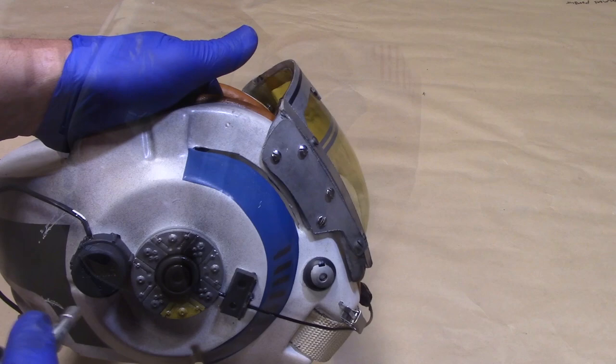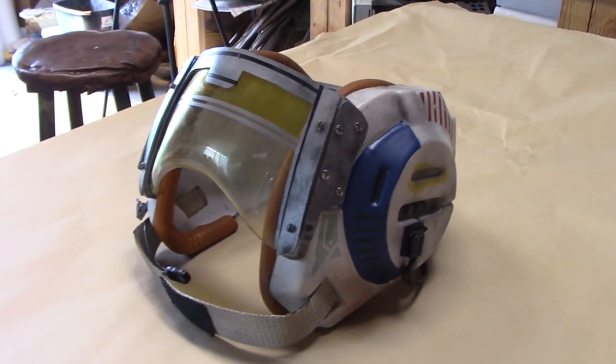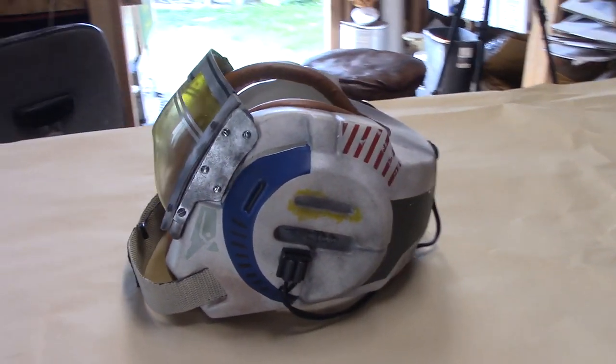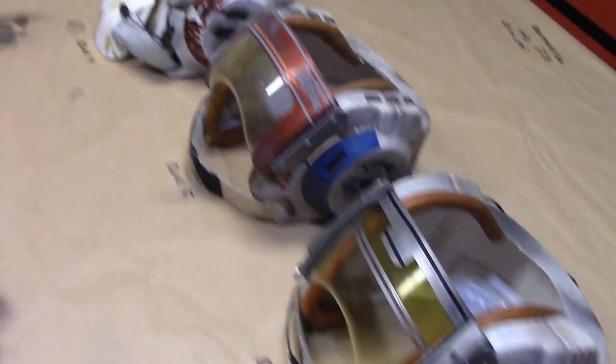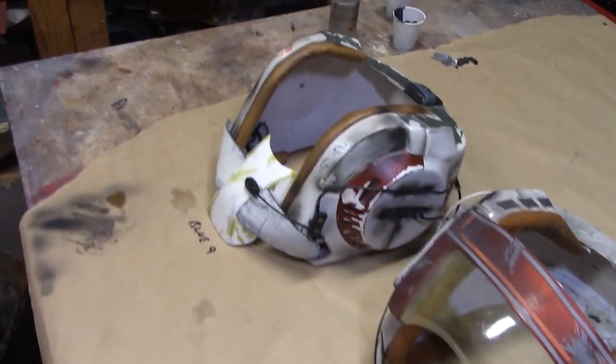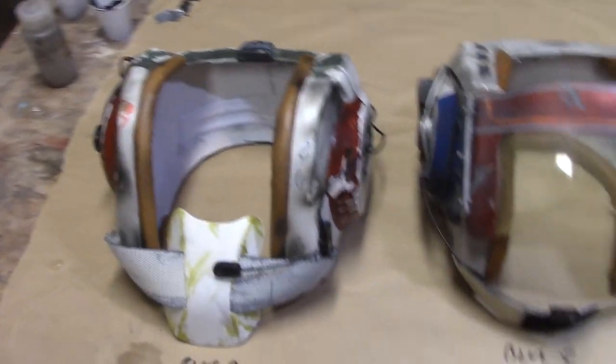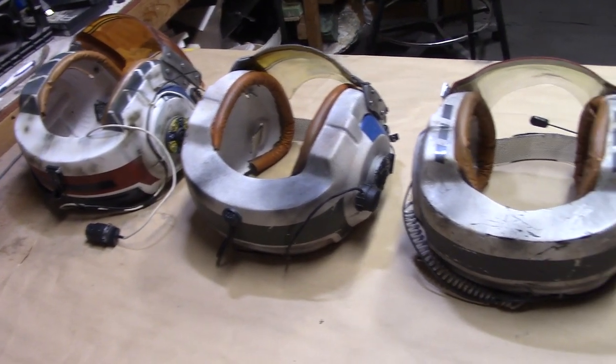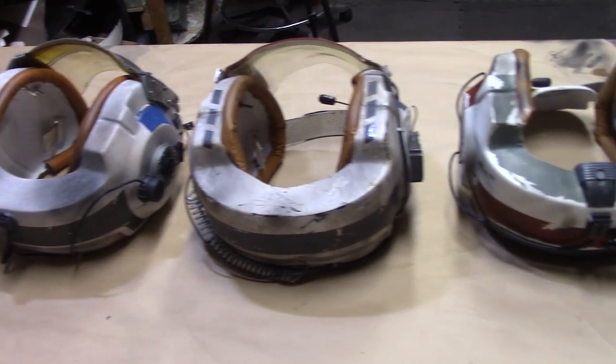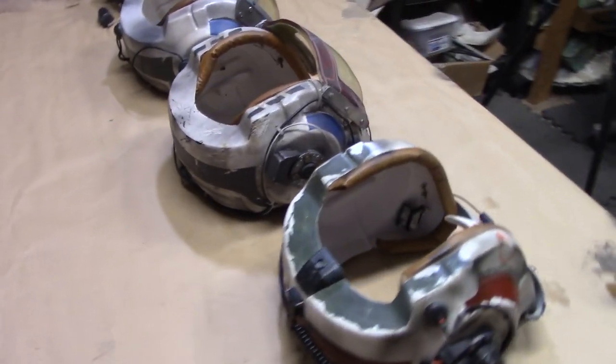And that wraps it up for the blue leader buildup. This was a pretty simple buildup. It's got minimal greeblies. Minimal weathering. This is blue 2. There's blue leader. Blue 5. And blue 9. If you like the content of this video, make sure that you like and subscribe. And feel free to share. Make sure that you check out the Instagram, Facebook, and website related to these projects. Thanks for watching.